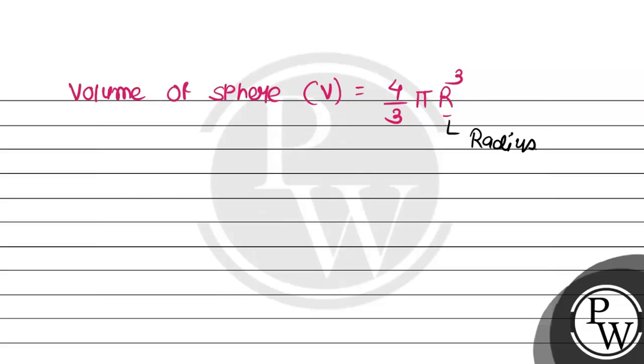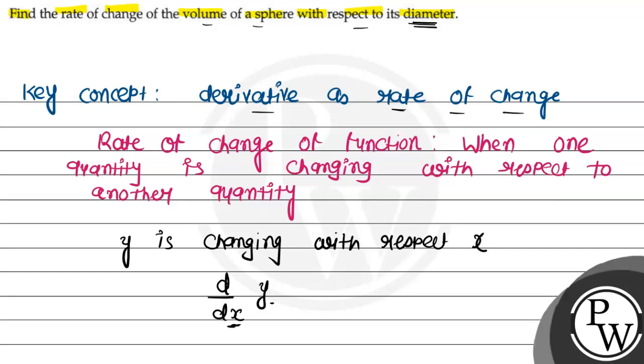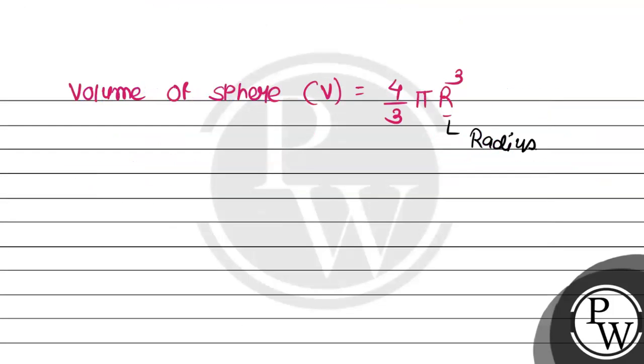Now, with respect to what is given? Diameter. We know the relation between radius and diameter: D = 2R. So diameter equals 2 times radius. In place of radius, we need the equation in terms of D, so r = D/2.